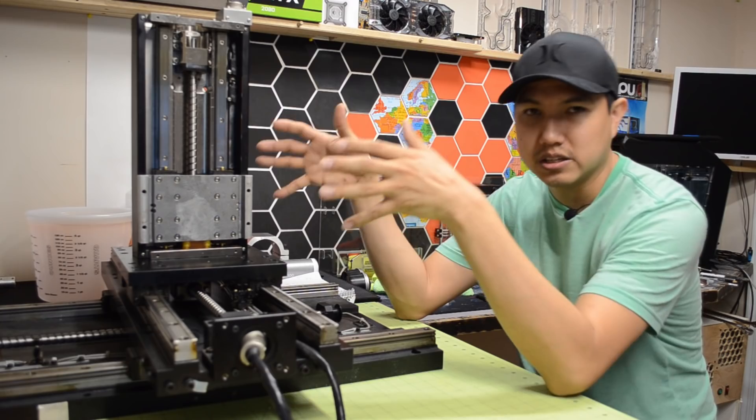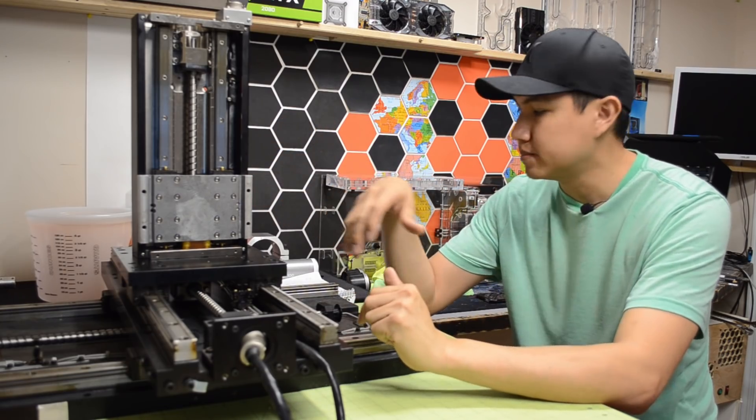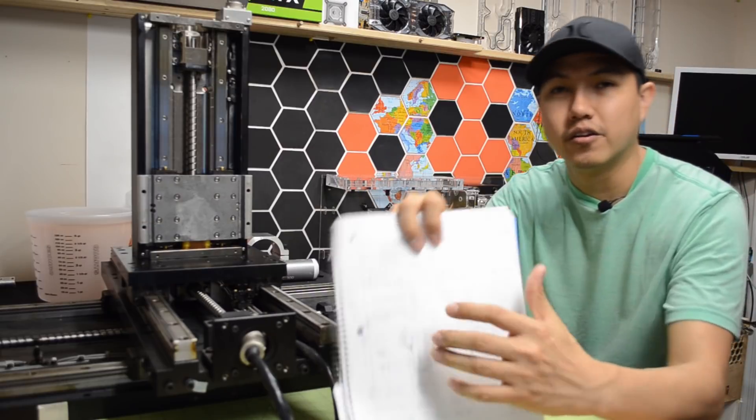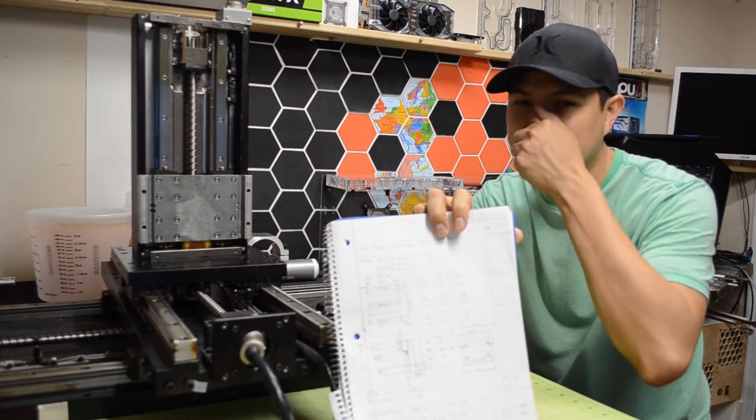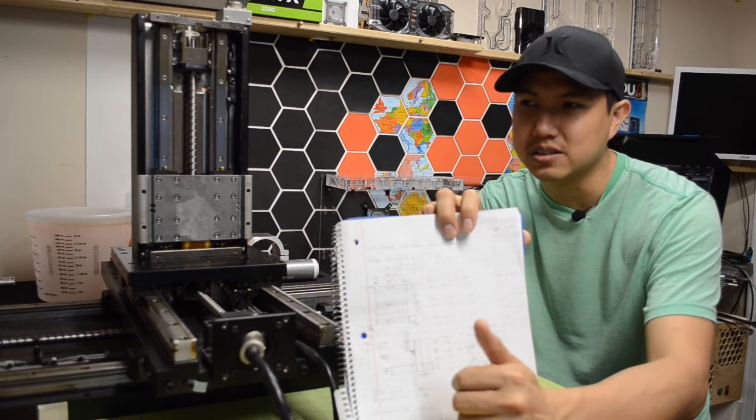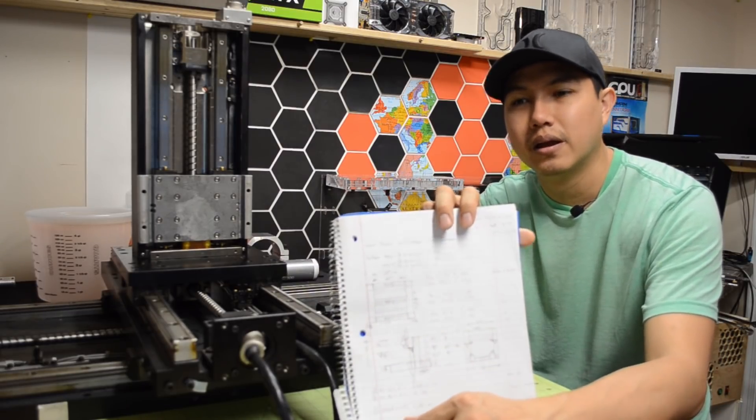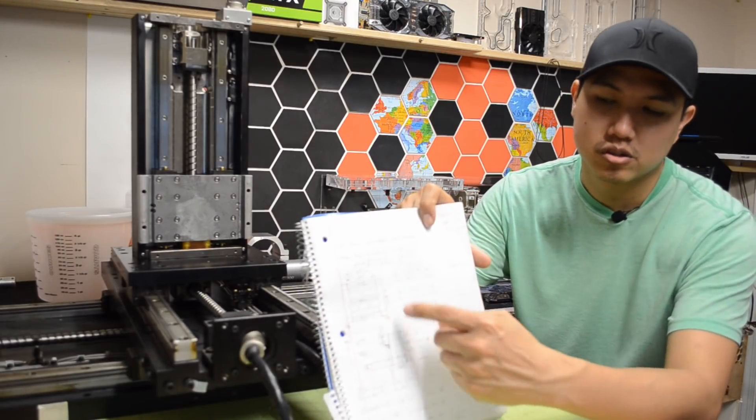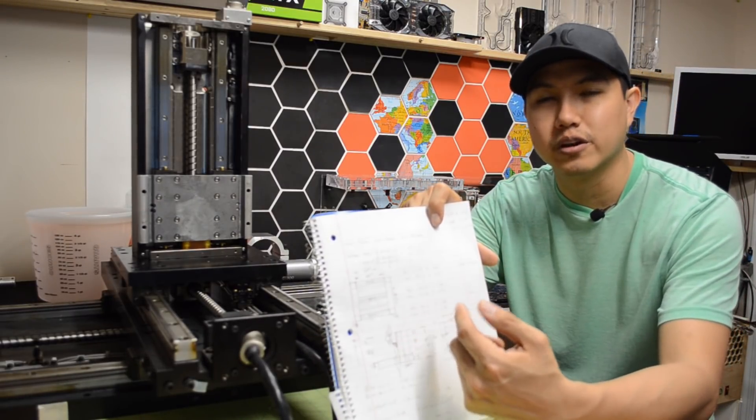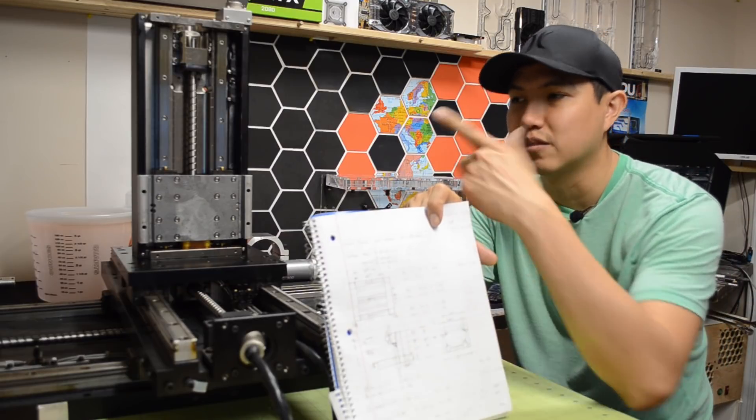The way I actually designed the frame is actually right here in a piece of paper, since I actually don't know how to draw the whole CNC in a 3D program. So right here is just a bunch of drawings and mainly to figure out some of the measurements needed for the frame.